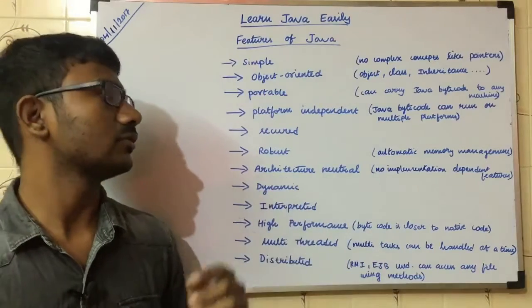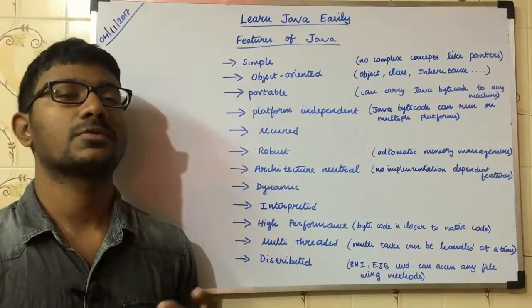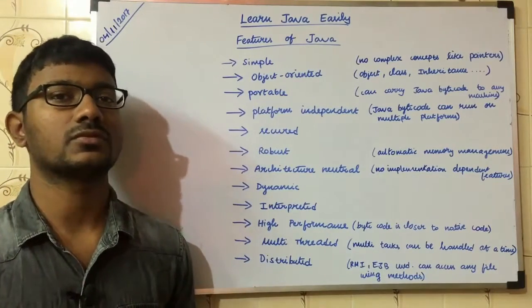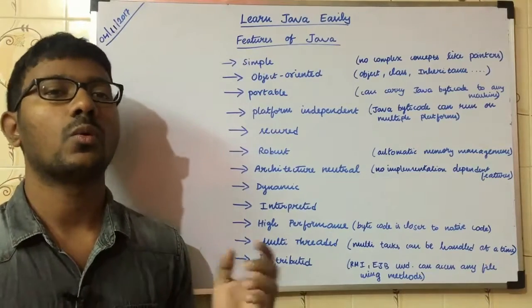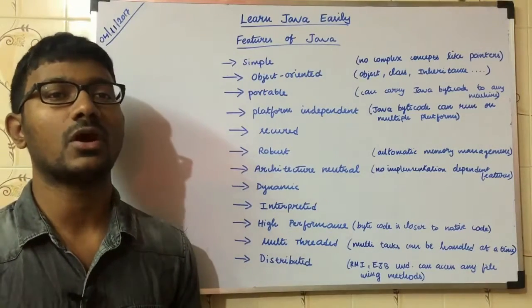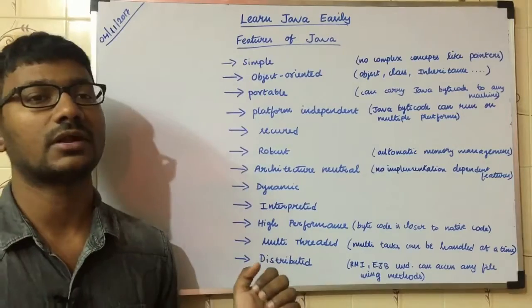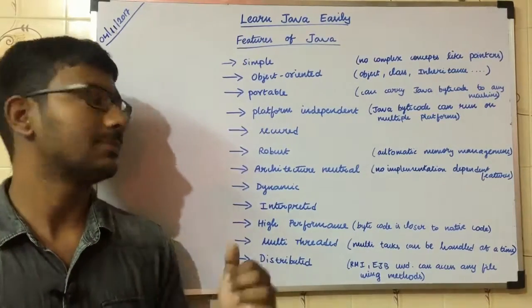And architecture neutral. For example, if you are using C/C++, 32-bit architecture behaves differently from 64-bit architecture. But in Java, the architecture is independent — it works the same regardless of the underlying architecture.